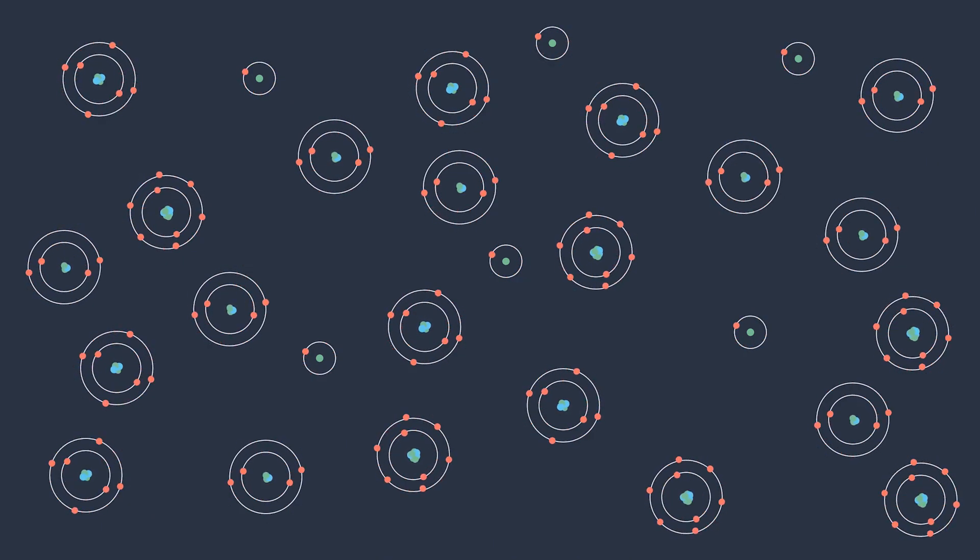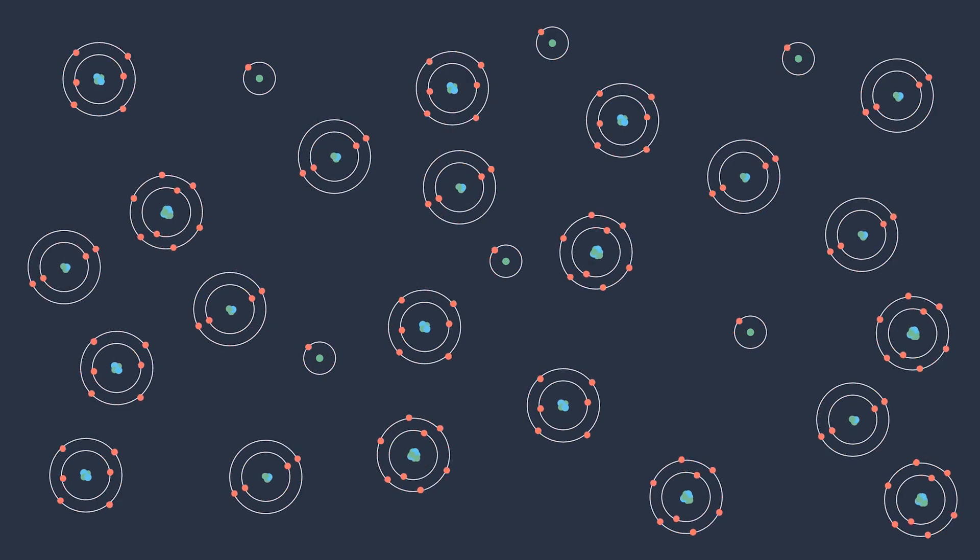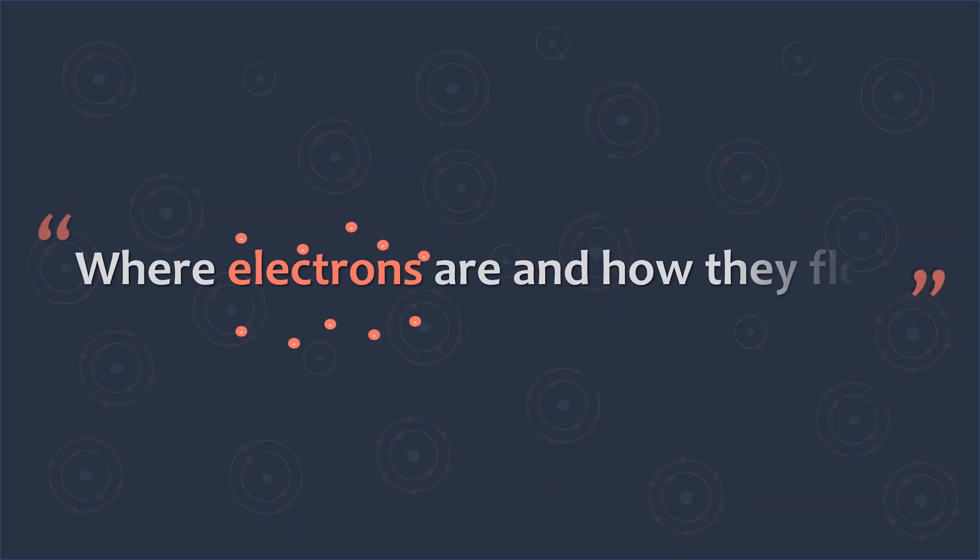There are many different definitions of chemistry, but the one I find very interesting is chemistry is where electrons are and how they flow. You can apply this definition to almost all chemical phenomena.